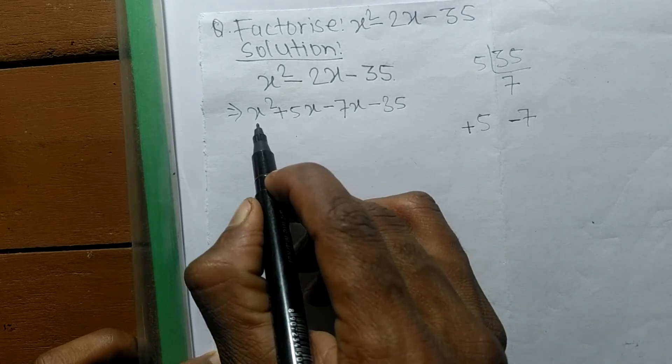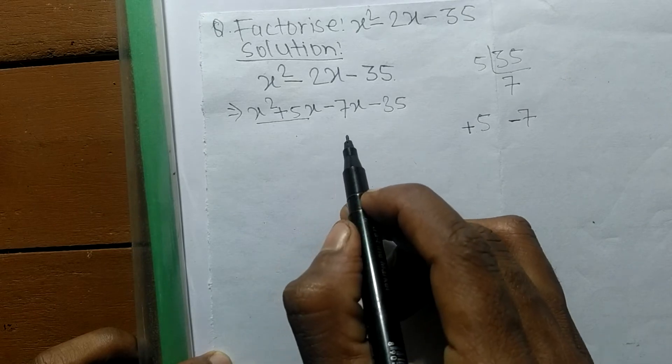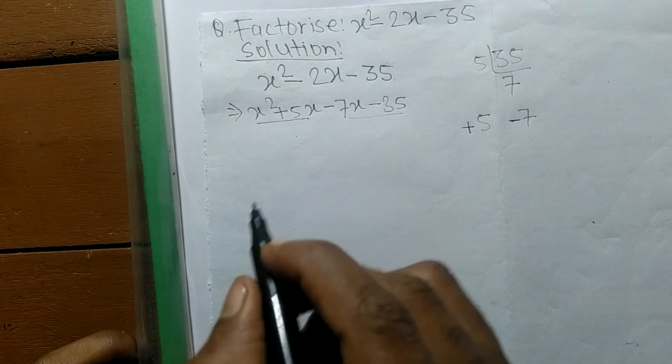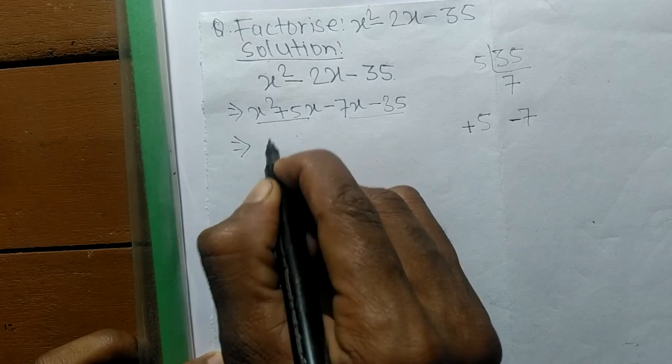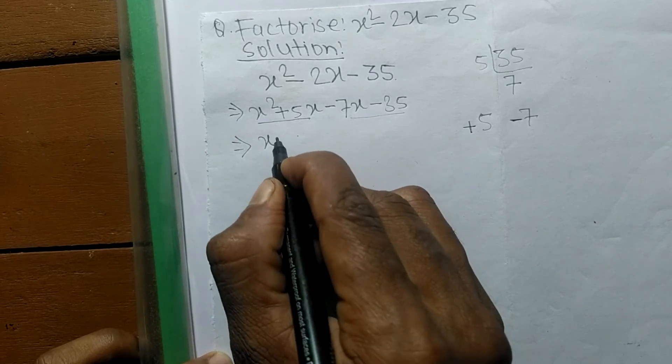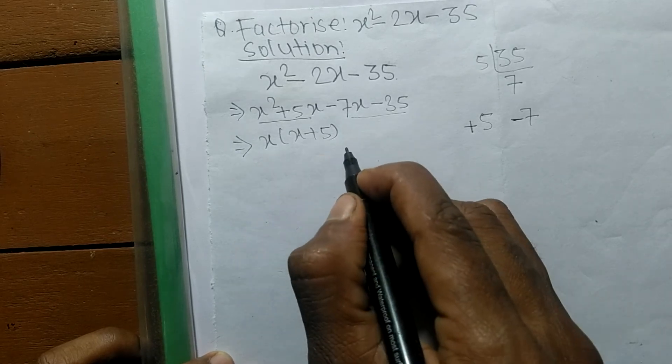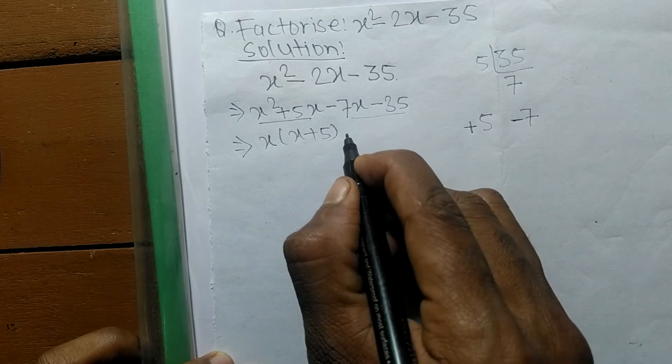These both are the first pair, and these both are the second pair. So in the first pair, the common term here is x, so the remaining is x plus 5.